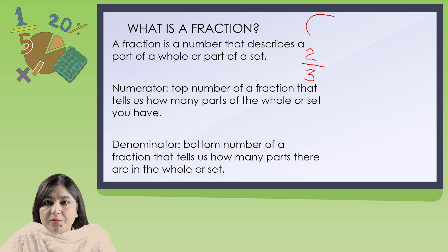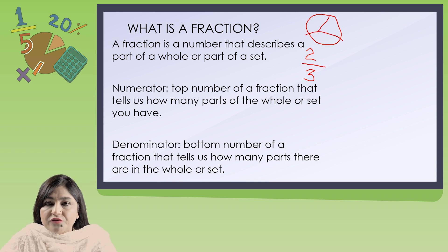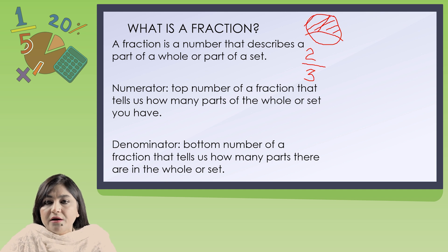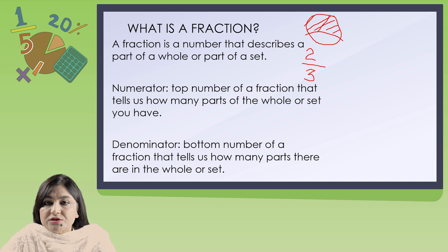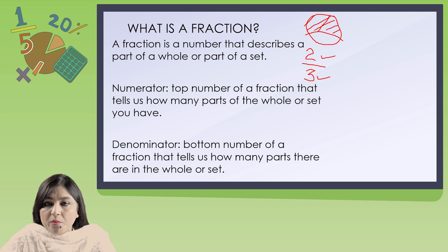For example, look at this diagram. How many total parts are there? 3. So out of 3 parts, how many do you have? 2. So 2 by 3 means you have 2 parts out of 3. The number 2 on top is the numerator and the number on the bottom is the denominator.